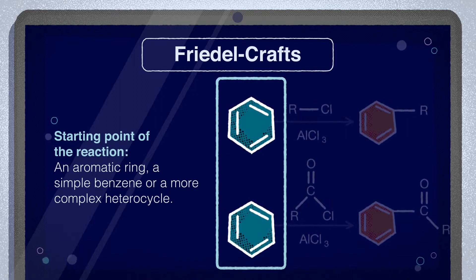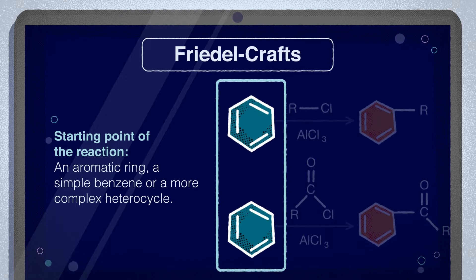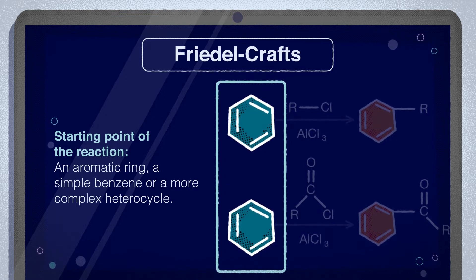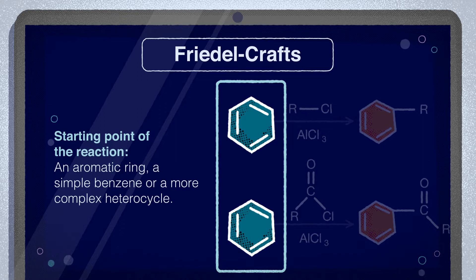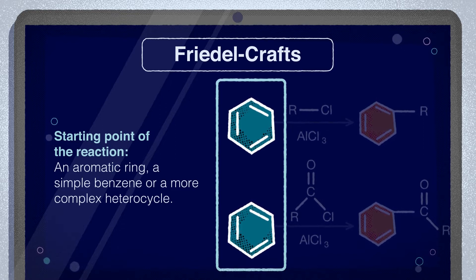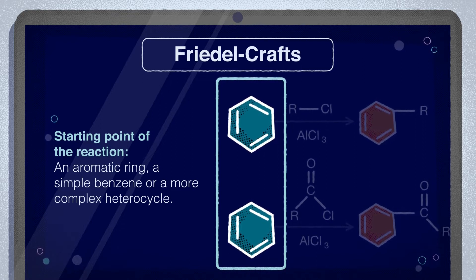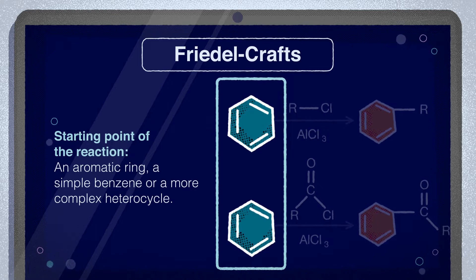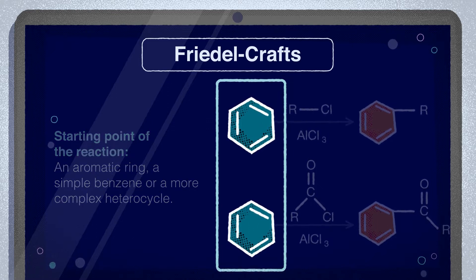The functionalization of the ring can affect the final product, with electron-withdrawing groups such as hydroxyl or amino groups having an ortho-para orientation effect, whilst electron-donating groups such as nitro or sulfonyl groups favor the reaction of the meta position.